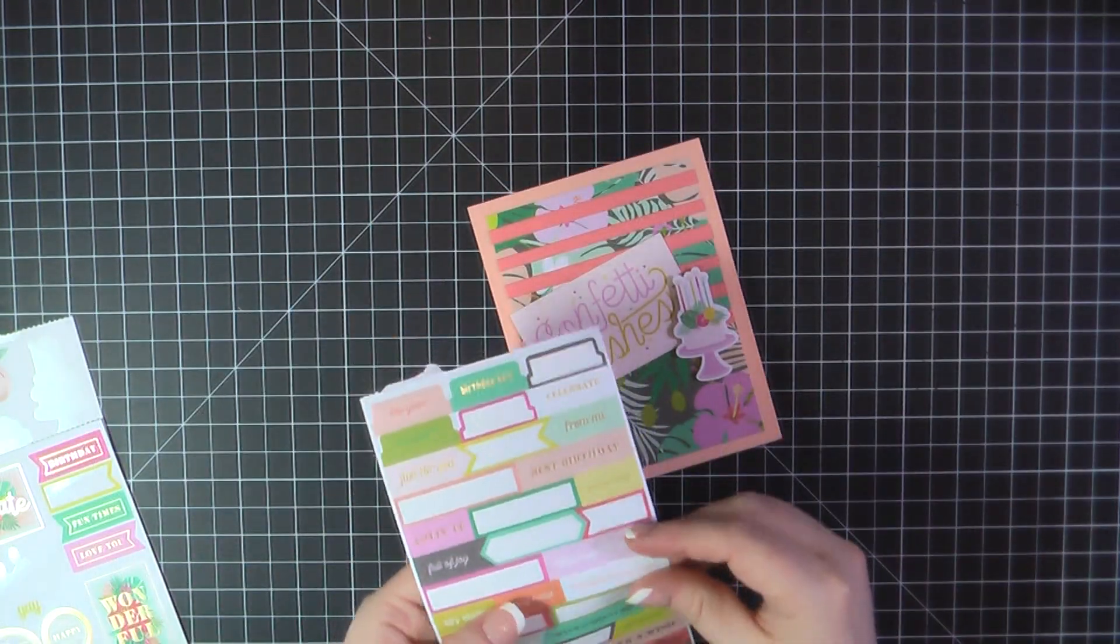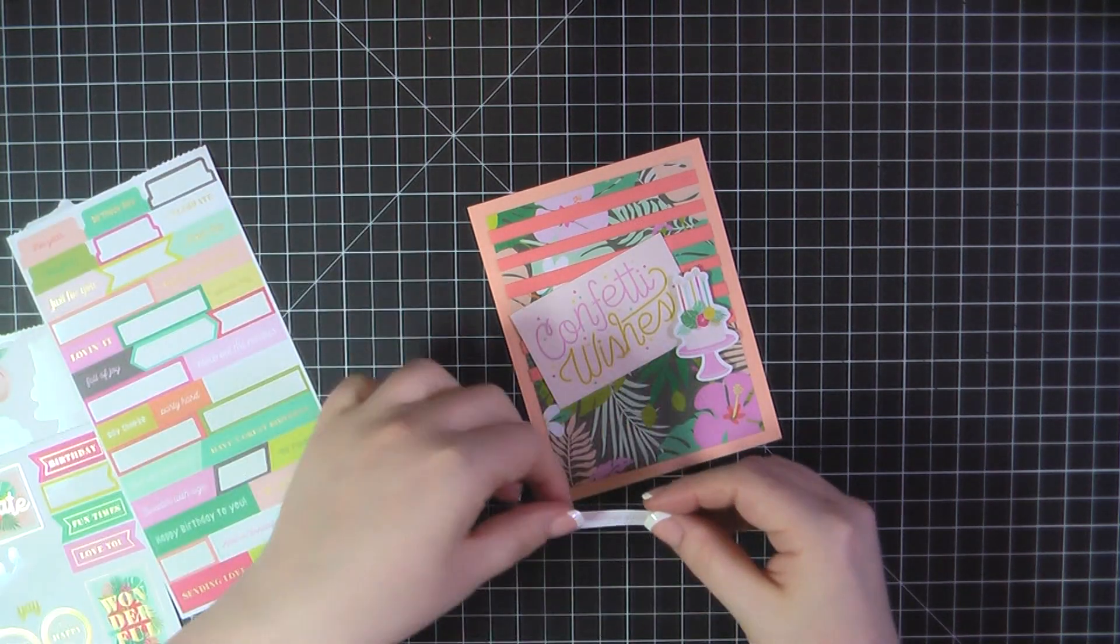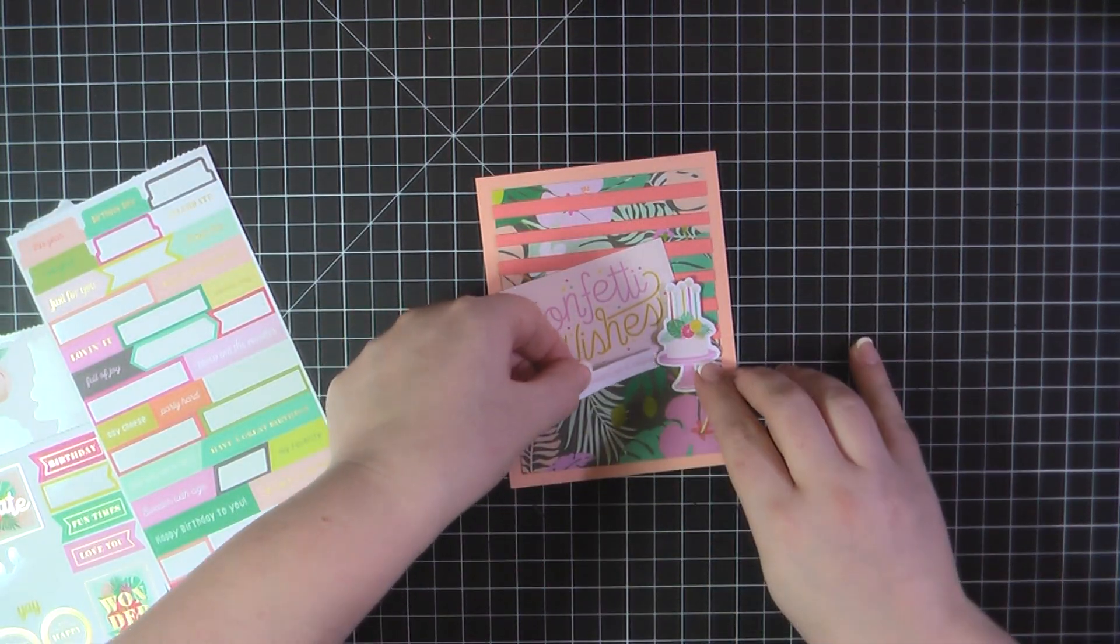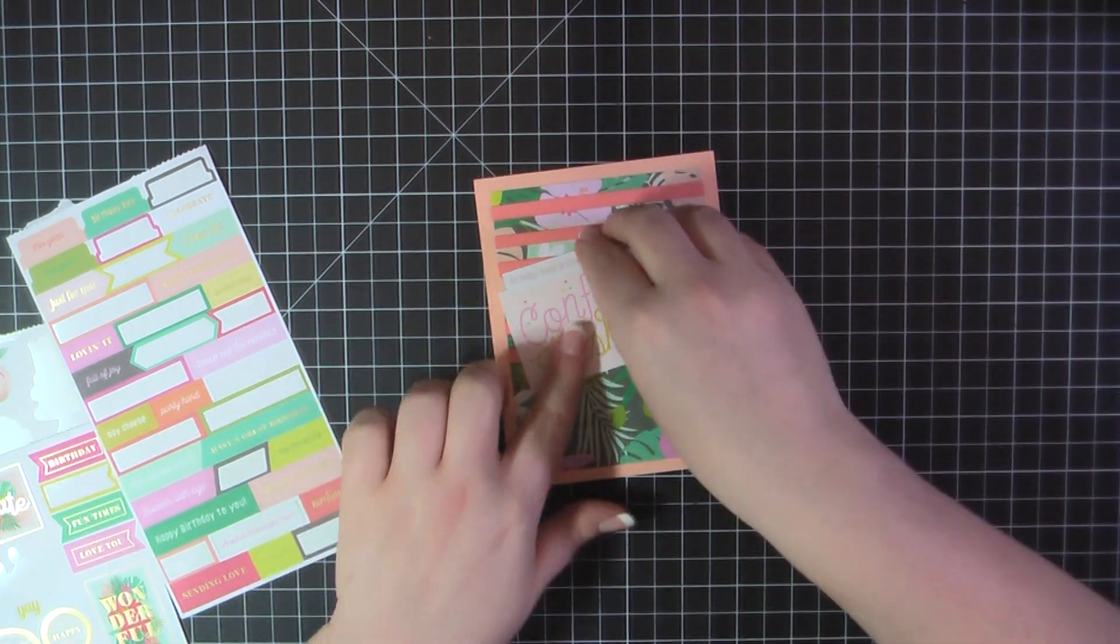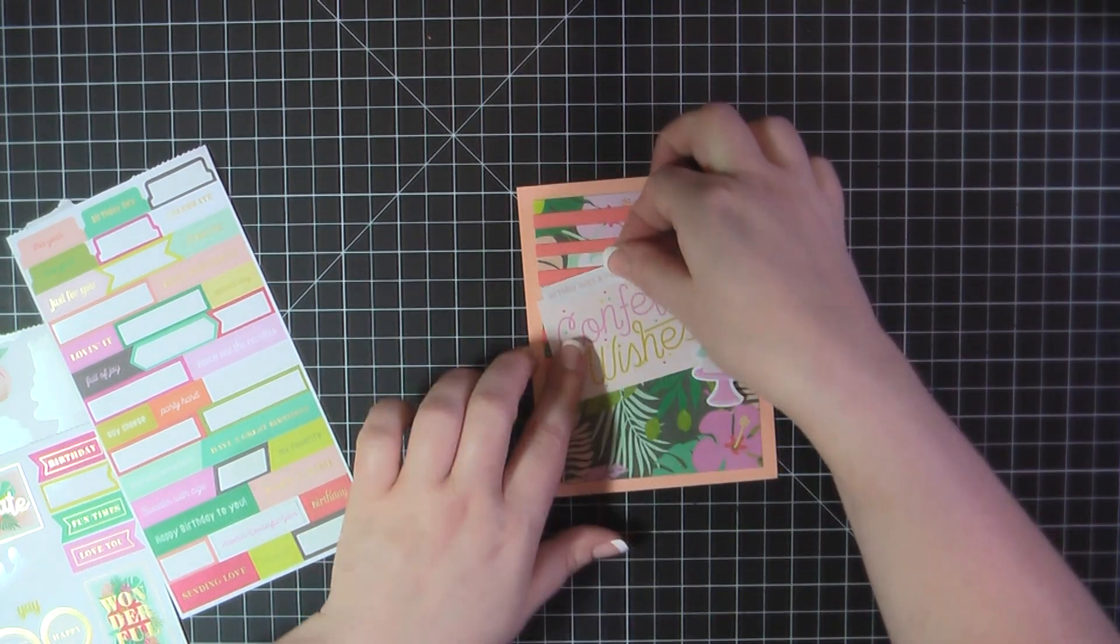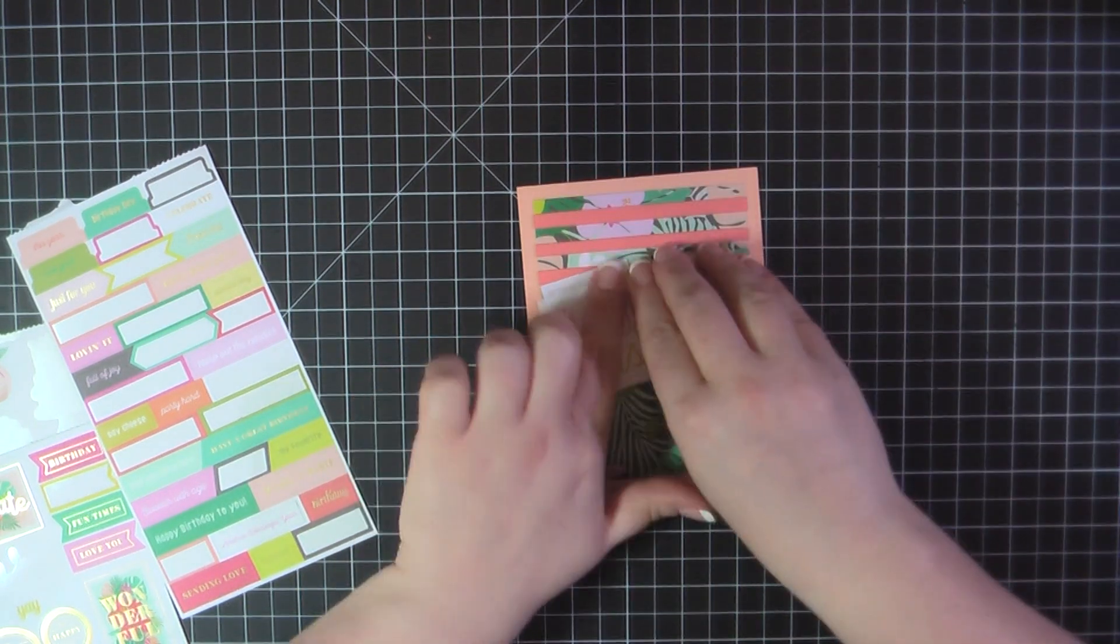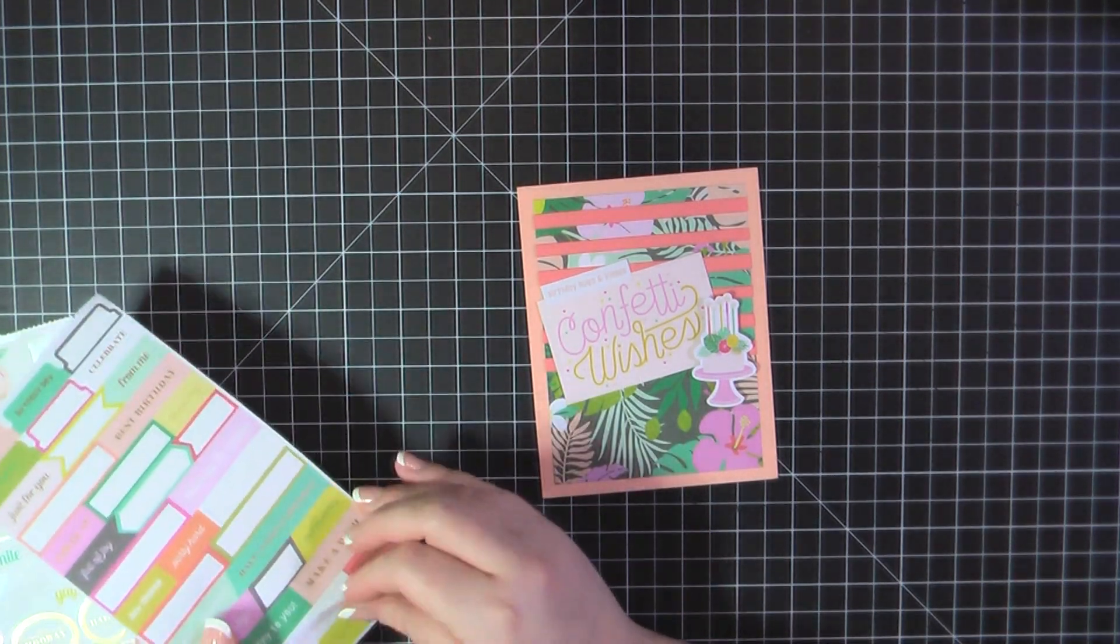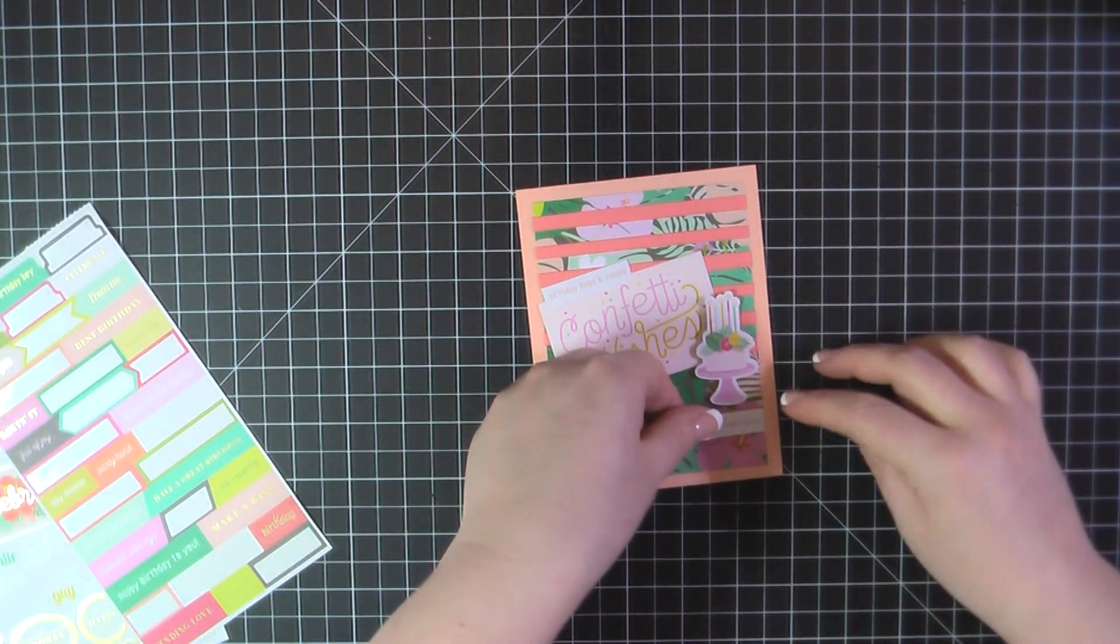Then I felt like it still needed a little something more so I'm going to grab a few of the stickers. This one reads, Birthday Hugs and Kisses. I'm going to place that here along the top of that cut apart. Then I'm going to grab one more that reads, Another Wonderful Year, and I'm going to stick that just underneath the cake.